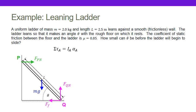So we're going to start writing out our torques. I've got three logical axes I could choose: the wall, the floor, or the center of mass. I want to pick the axis that gets rid of the most unknowns from my torque equation. The wall has only one unknown — a decent choice but maybe not the best. The center of mass is terrible because it eliminates the one thing I do know: the weight of the ladder.